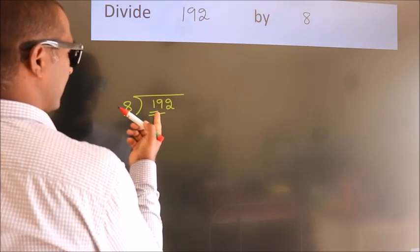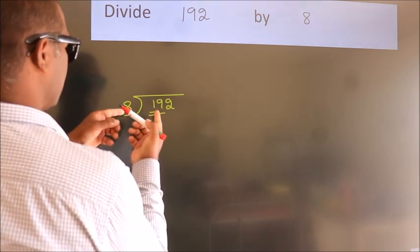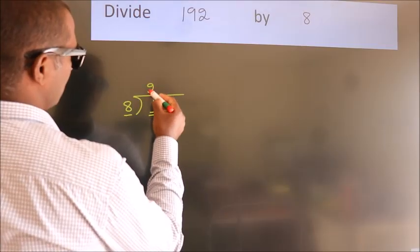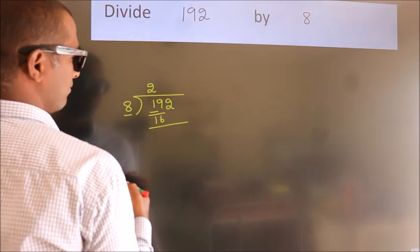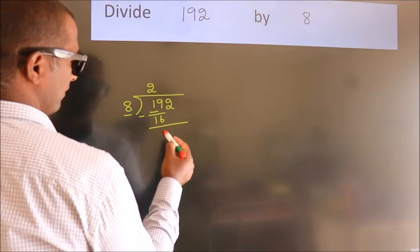A number close to 19 in the 8 table is 8 twos, 16. Now we should subtract. We get 3.